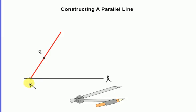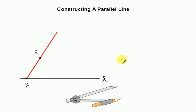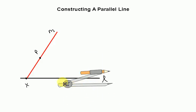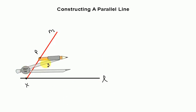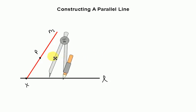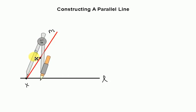So we've got point X and point P. Let's go ahead and label this as line M. Now I want to take my compass, and I'm going to put the pivot point at X, and I'm going to draw an arc.